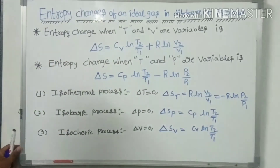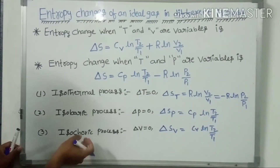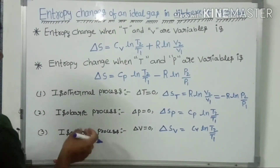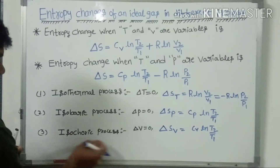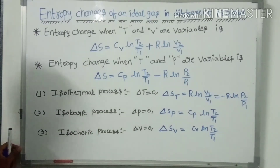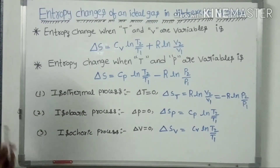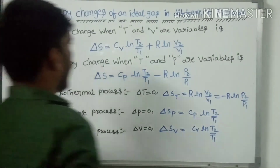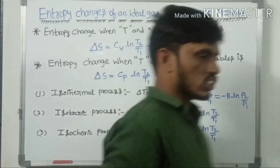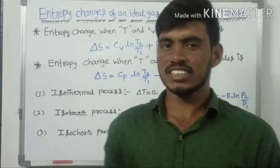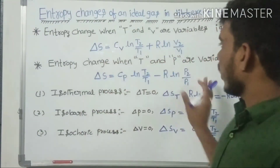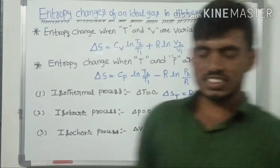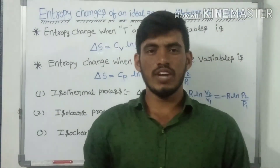This covers the change in entropy of an ideal gas in the isochoric process, isobaric process, and isothermal process. This is all about the entropy changes of an ideal gas in different processes. Thank you very much.